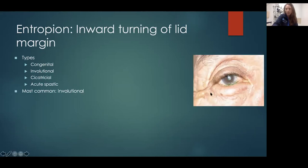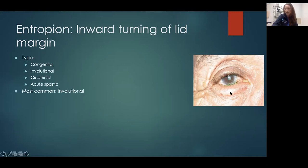Here's an example: the eyelid is turning in, and subsequently these eyelashes are hitting the front part of the eye. It can cause scratches on the cornea that are painful and lead to foreign body sensation and tearing. It can also predispose the patient to infection because it's a break in the cornea and bacterial pathogens can get in. They can develop ulcers and really nasty infections, so you never want to leave a patient with lashes hitting the cornea.